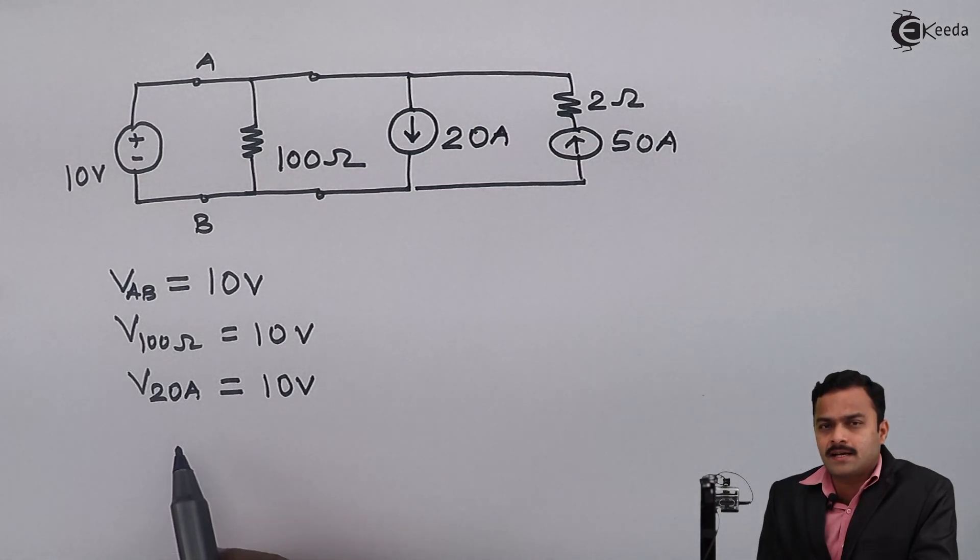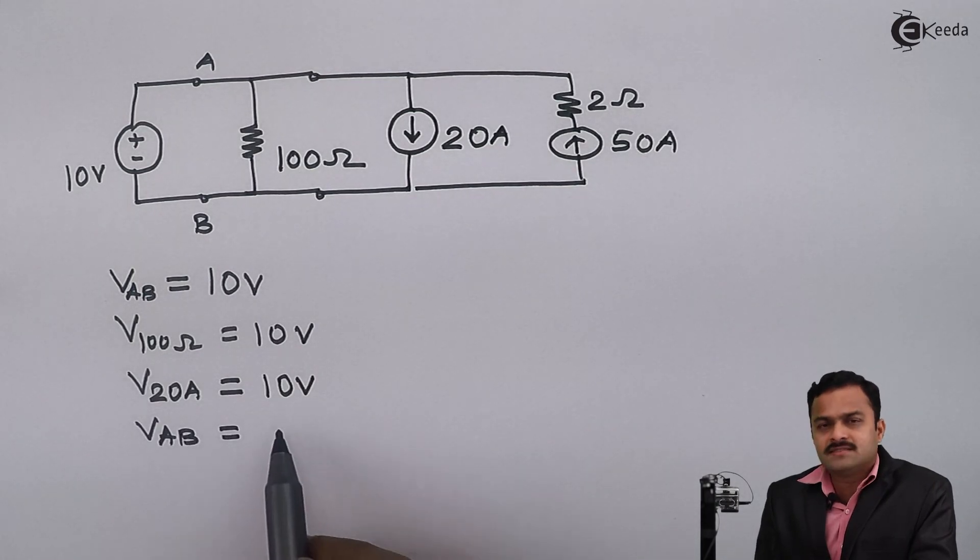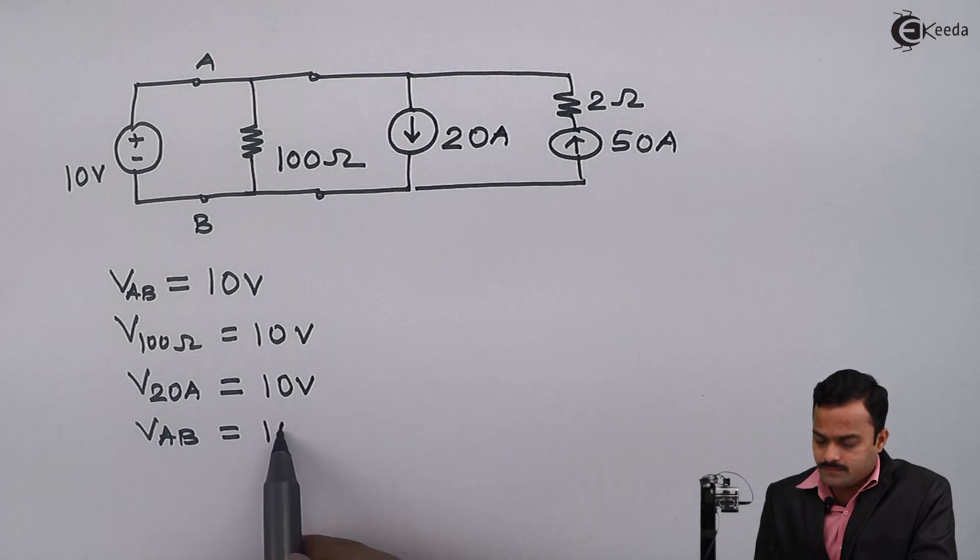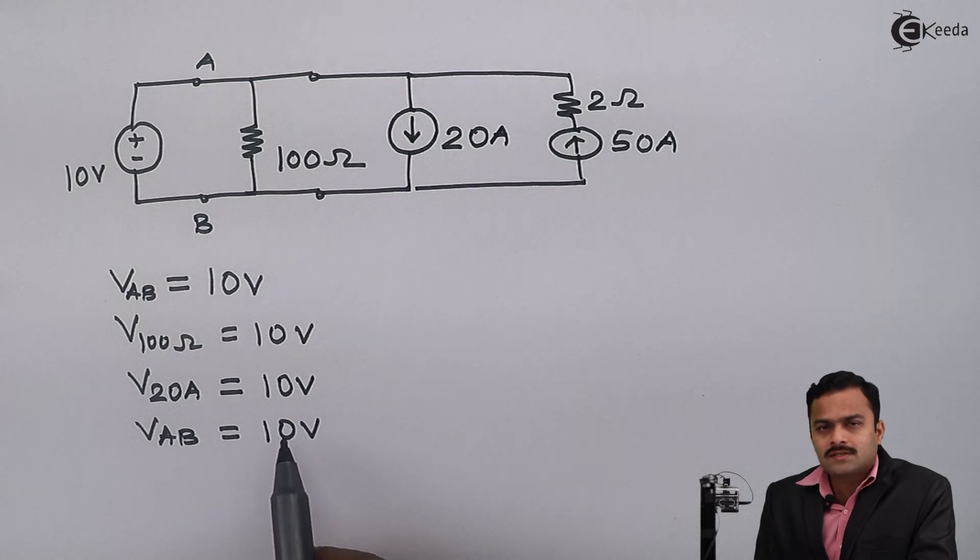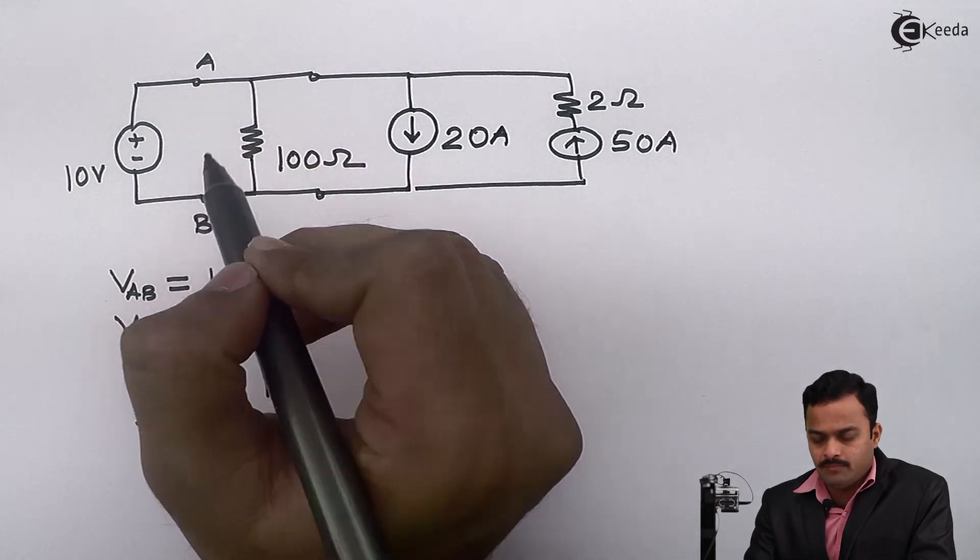So this time I increase the current level, but still even if I ask a question what is V_AB, my answer is going to remain the same: 10 volts.